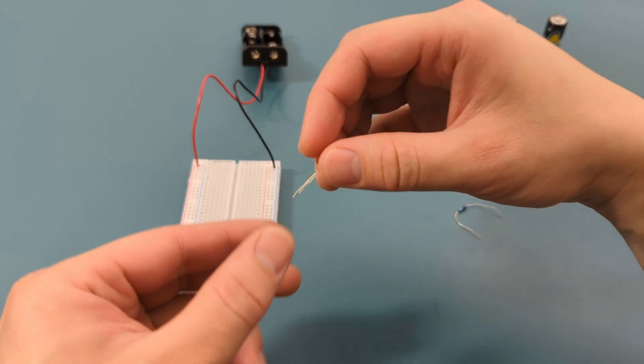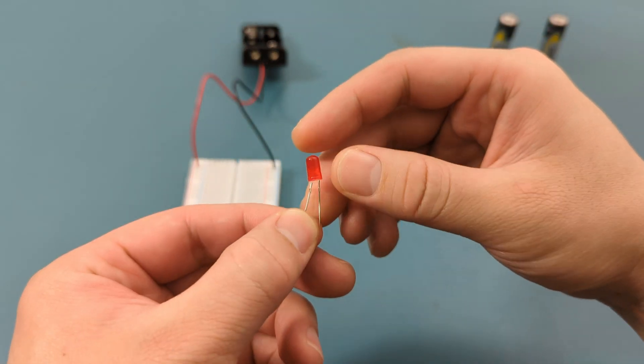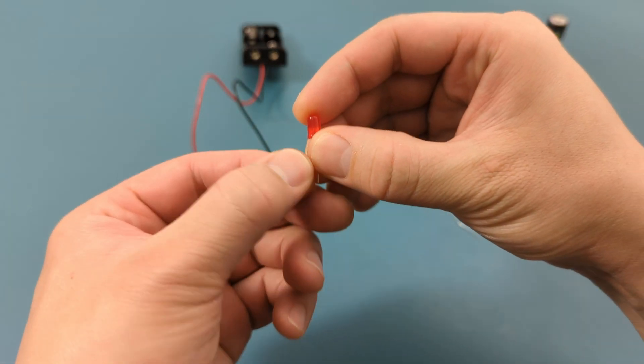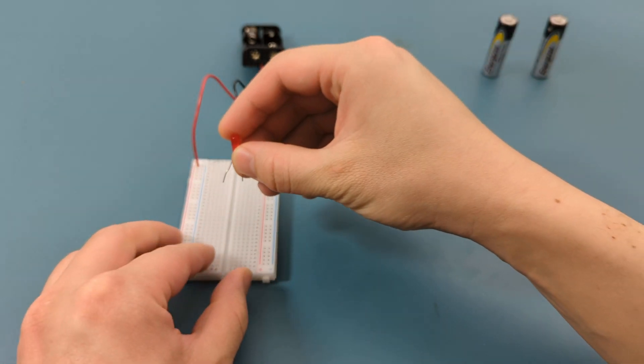Next, plug one leg of your LED into the same column as the positive terminal, and the other leg into the middle column. Make sure the longer leg is on the left side.